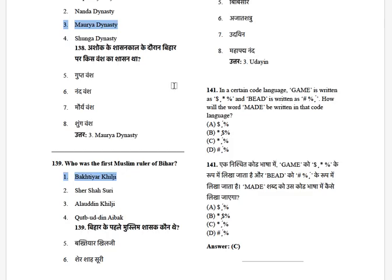Now we are moving towards the math and reasoning section. In a certain code language, 'game' is written in a particular way, and 'braid' is written in another. You can look at it and figure out how the word 'made' would be written in the code.